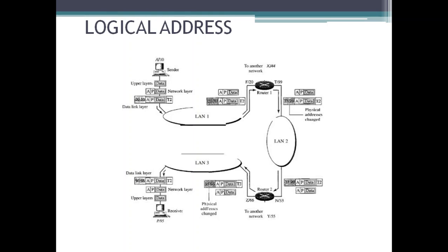Note that the physical source address changes from 10 to 99, and the physical destination address changes from 20 to 33, but the logical source and destination addresses must remain the same — otherwise the packet will be lost. At Router 2, a similar scenario occurs: physical addresses are changed and a new frame is sent to the destination computer. When the frame reaches the destination, the packet is decapsulated, the destination logical address P matches, and the data is delivered to the upper layer. Physical addresses change from hop to hop, but logical addresses remain the same.